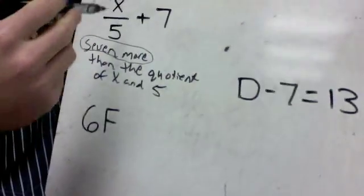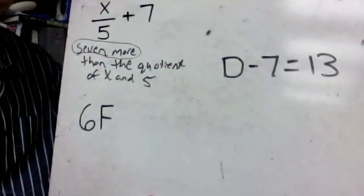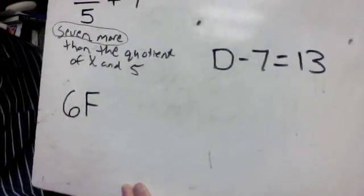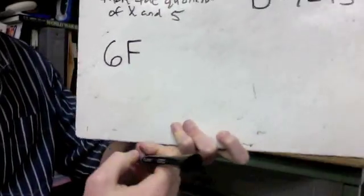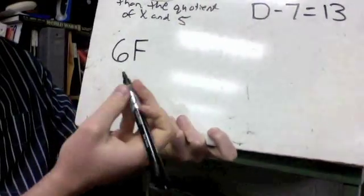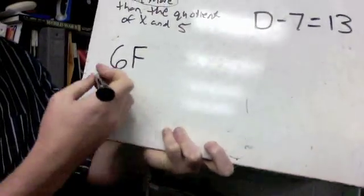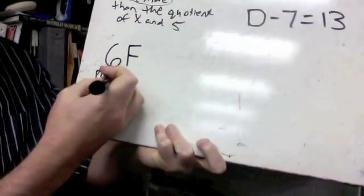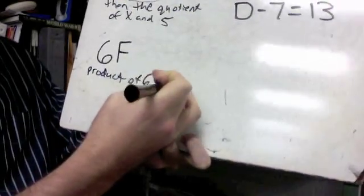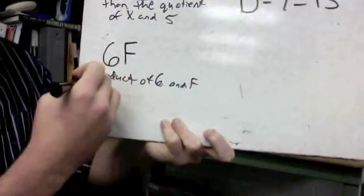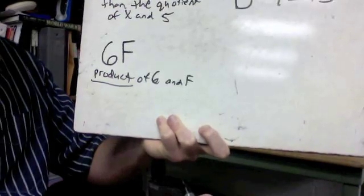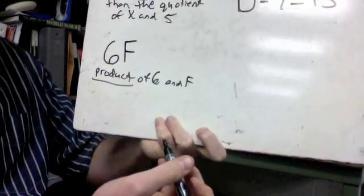I could say seven more than x cut into five pieces. Either way, it's going to work out just fine. For this one right here, I could just simply put, it's six times f is what it is. And you could just say six times f would be fine. But I could also put product of six and f. Again, product's that key word. Product is the answer to a multiplication problem. I could just say six times f also.